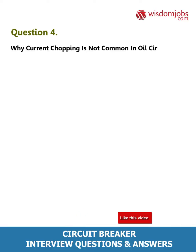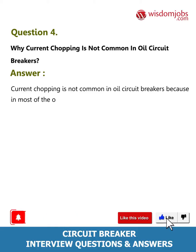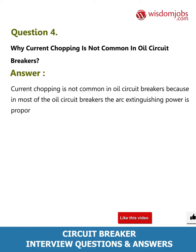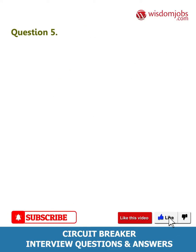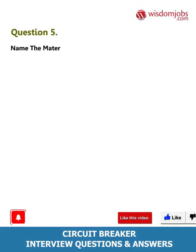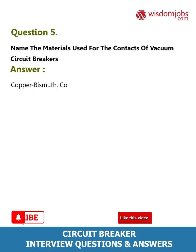Question 4: Why is current chopping not common in oil circuit breakers? Answer: Current chopping is not common in oil circuit breakers because in most oil circuit breakers the arc extinguishing power is proportional to the magnitude of the current to be interrupted. Question 5: Name the materials used for the contacts of vacuum circuit breakers. Answer: Copper bismuth, copper lead, copper tellurium,